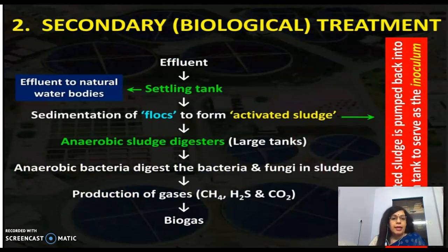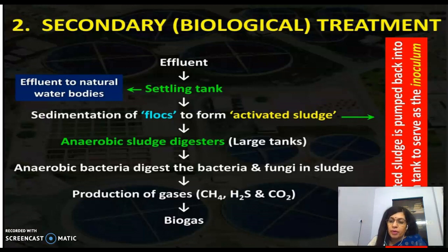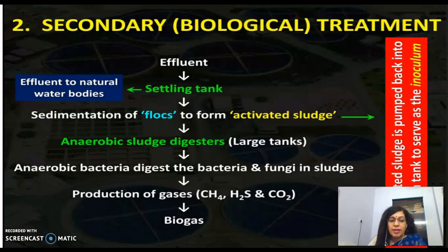The higher the organic matter, the higher the oxygen demand and pollution level. After secondary biological treatment, the effluent is passed into a settling tank where the flocs sediment. One portion of this activated sludge is returned to the aeration tank as inoculum to continue the process. The other portion is passed into large anaerobic sludge digesters.